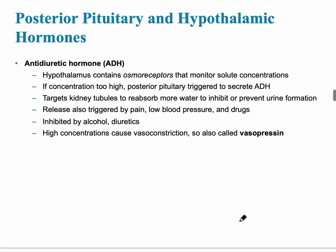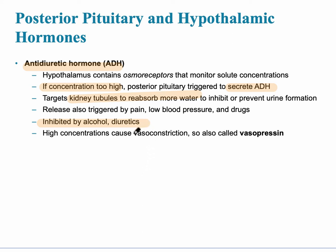The second hormone stored in the posterior pituitary is ADH, antidiuretic hormone, which is responsible for fluid concentration. When blood concentration is too high, the posterior pituitary secretes ADH to prevent diuresis — water stays in the blood, diluting plasma back to normal. It targets the kidney tubules to reabsorb more water and inhibit urine formation. ADH is inhibited by alcohol and diuretics, and at high concentrations it causes vasoconstriction, which is why it's also called vasopressin.